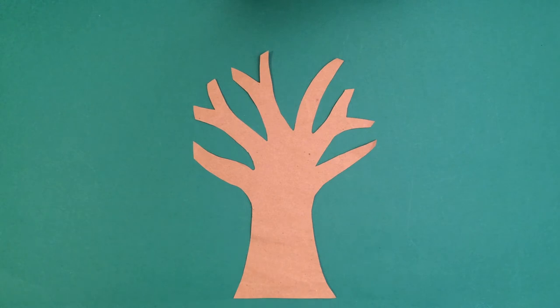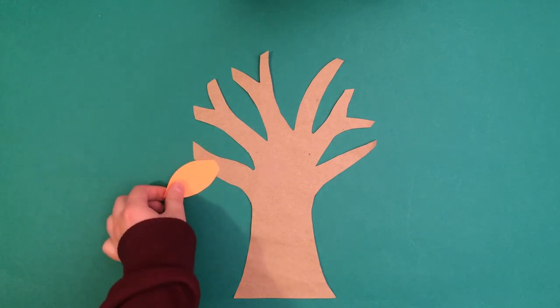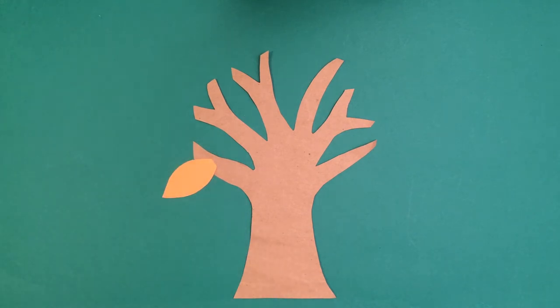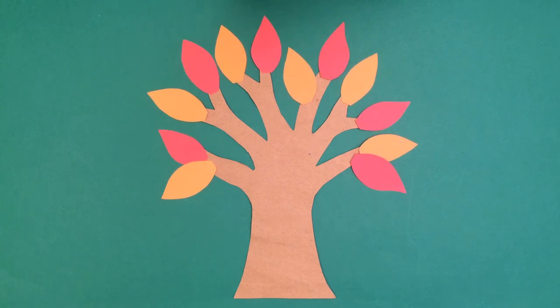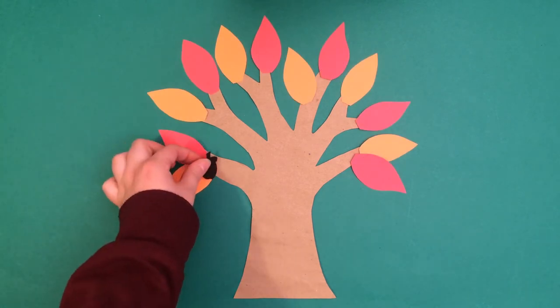Then you can talk with them about each season. For fall, they can cut out paper leaves in fall colors and place them onto the tree. They could also cut out some seeds for the tree, like these acorns.